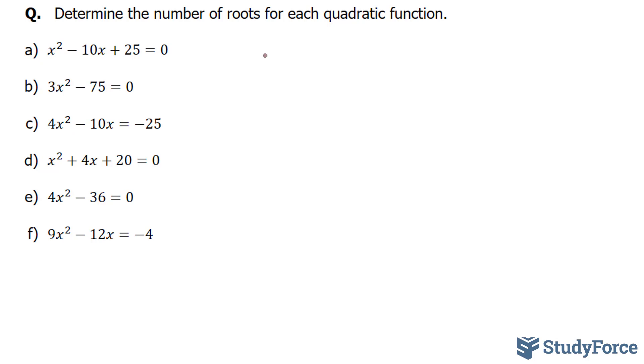So let's start with a. Our a term here is equal to 1, and I'm referring to the coefficient of the x squared term. Our b term is equal to negative 10, and our c term is equal to positive 25.